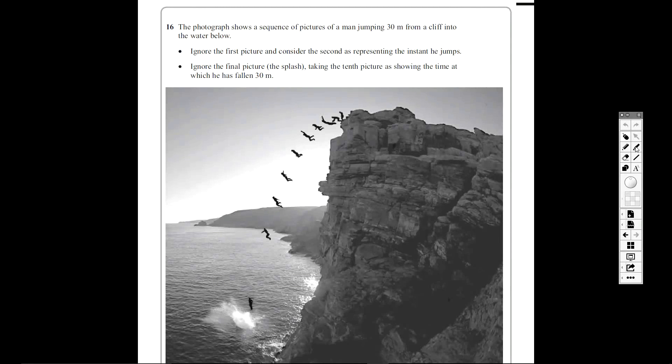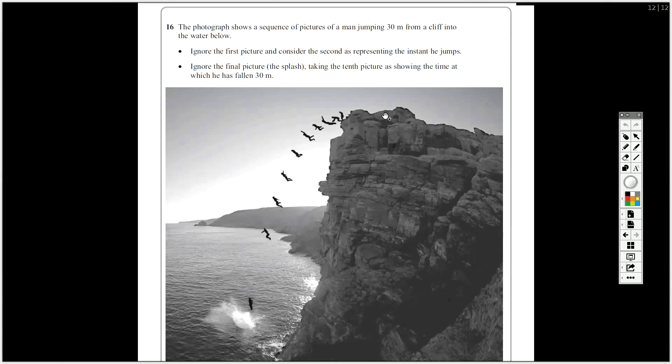So this is an Edexcel Unit 1 paper, this is question 6. You can see straight away this is to do with what you know about projectiles, where you need to keep vertical and horizontal motion very separate while you work. The photograph below shows a sequence of pictures of a man jumping 30 metres from a cliff, so we've got some useful information there, that's displacement in the y dimension.